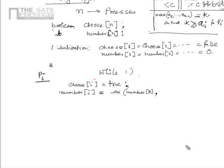Process Pi first assigns choose[i] = true, then assigns number[i] = max(number[0], number[1], ..., number[n-1]) + 1. This gives it a distinct number that is the maximum of all other processes' numbers plus one, meaning it will try to enter the critical section after all other processes — essentially giving way to others.